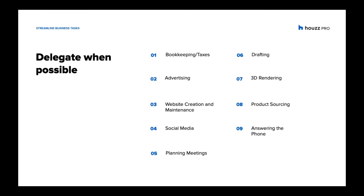Here are some suggestions for tasks you could delegate: bookkeeping and taxes, advertising, website creation and maintenance, social media, planning meetings, drafting, 3D rendering, product sourcing, and answering the phone. With Houzz Pro and its new features and easy-to-use tools, you can also do most of these activities on one platform — advertising, website design, planning meetings, drafting, 3D rendering, and product sourcing — all in one solution.